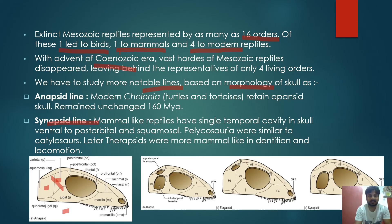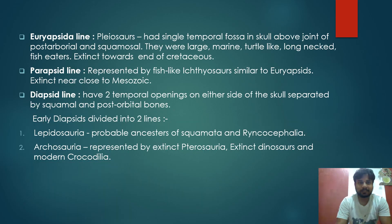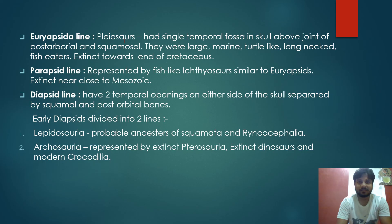The Anapsid line includes turtles, tortoises, and terrapins. The Synapsid line includes pelycosaurs and therapsids, which later evolved into mammals. In the Euryapsid line, plesiosaurs had a single temporal opening above the postorbital and squamosal bones — they are extinct, close to the Mesozoic era. The Euryapsid line also includes fish-like ichthyosaurs.